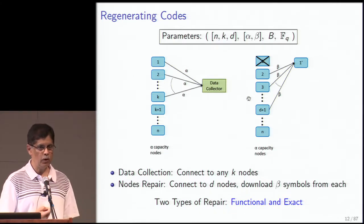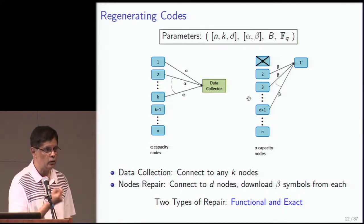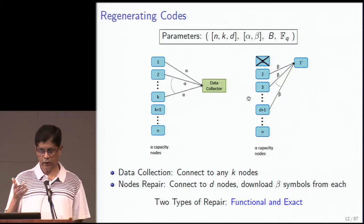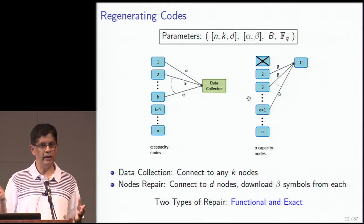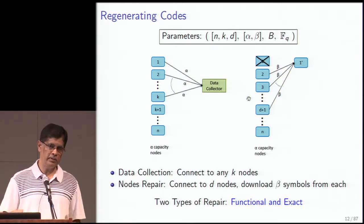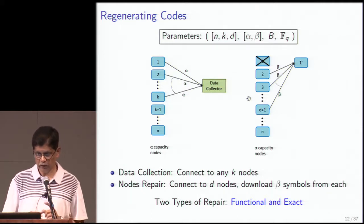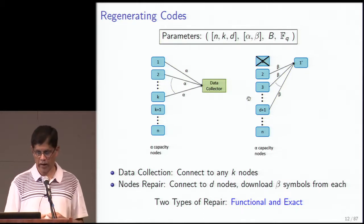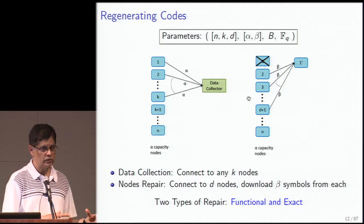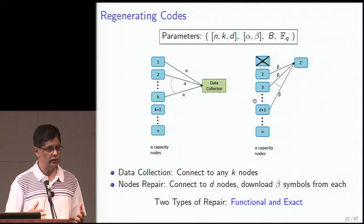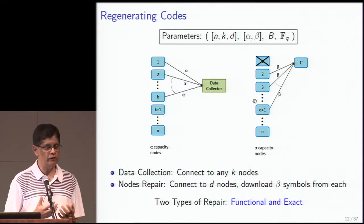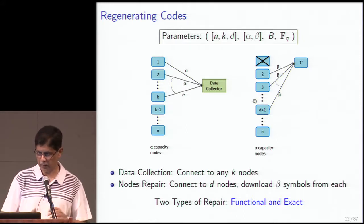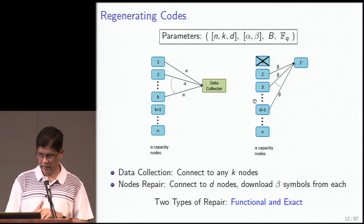You want to be able to connect to any k nodes and recover the data — that's not new, as Reed-Solomon codes do that. What is new is that when a node fails, with traditional Reed-Solomon codes there's really no natural option to repair a failed node other than downloading all the data from the remaining nodes, extracting whatever information you need to replace the failed node. There is no efficient way — what is stored in the node is very small but there seems to be no option other than to download everything.